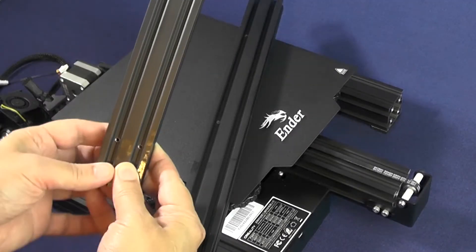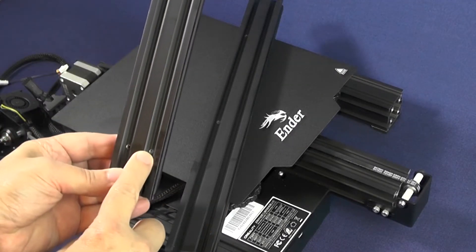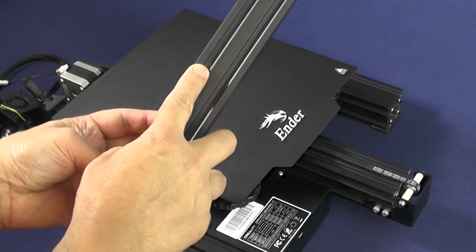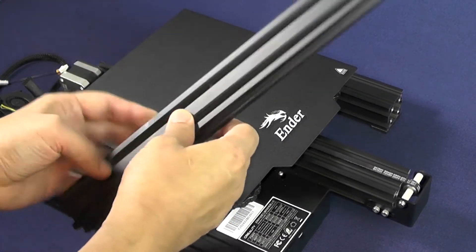One of the 2040 aluminum extrusions has screw holes on only one end, while the other one has screw holes on both ends as you can see here.